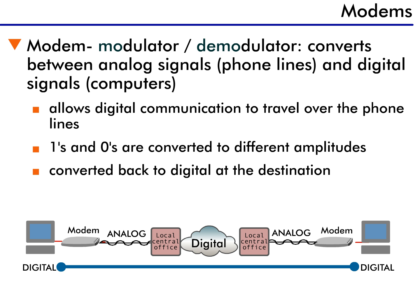The local phone office might then convert the signal back to digital for long-distance communications. Eventually, it's converted back to analog and delivered to the remote computer, where once again it becomes digital data. And this is how you can send data across telephone lines.